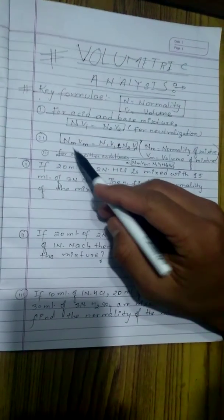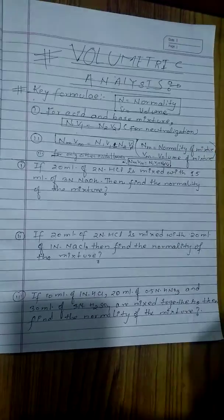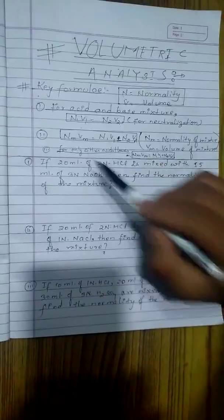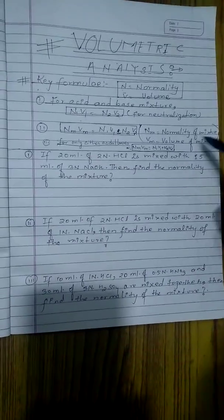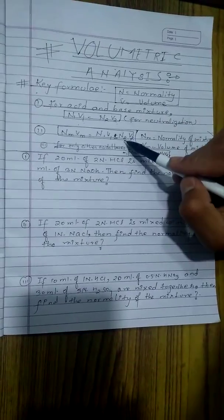And second, NmVm equals N1V1 minus N2V2 is for acid-base mixture. But here NmVm means normality of mixture and volume of mixture. Similarly, N1V1 means normality of acid, volume of acid, and in this case N2V2 for base. Here we use the negative sign.